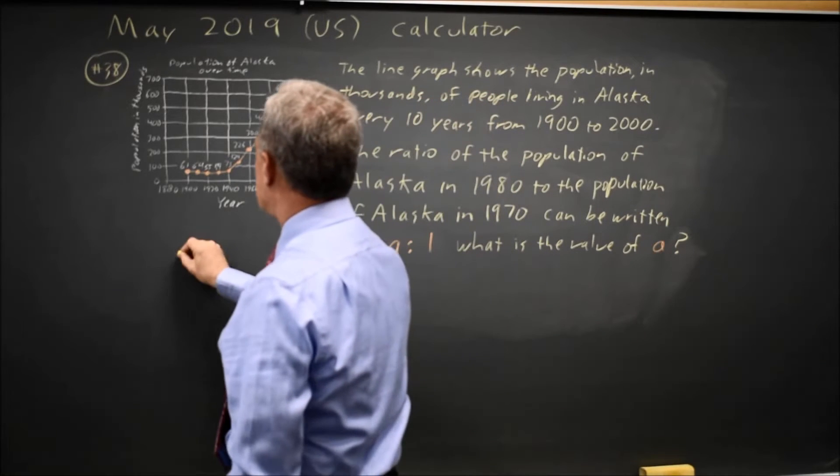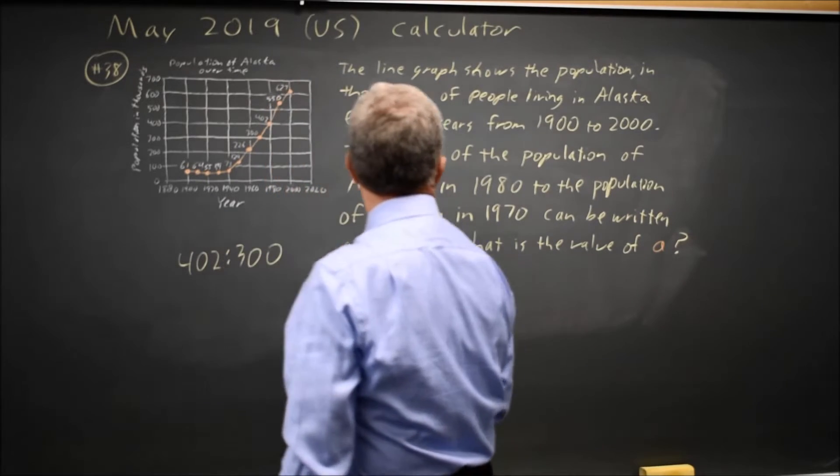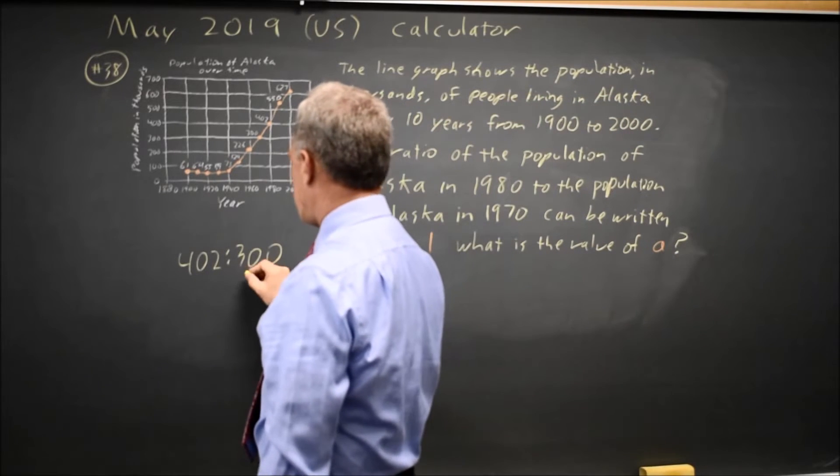That ratio is 402 to 300. But they want it in the form a to 1, where you're going to give them the answer for the value of a.